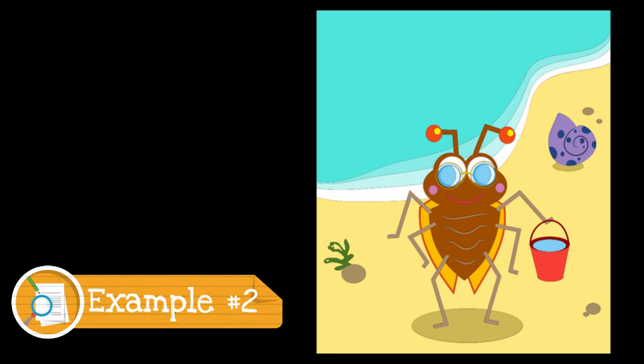Example number two. This beach bug has a pail of water because he is going to use the water to make a moat around his sandcastle. Is this an example of an observation or an inference? This is an example of an inference because you are using an observation to make a guess about what he was doing. You see the bucket of water and assume he is going to use it to make a moat.